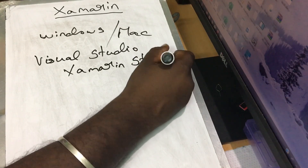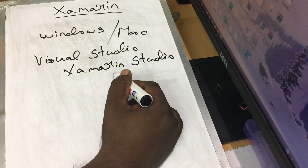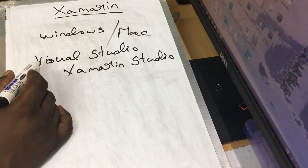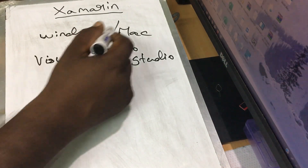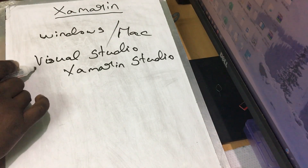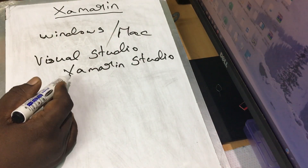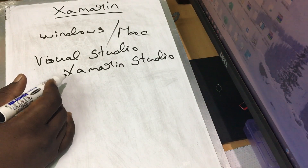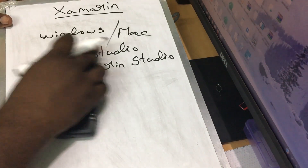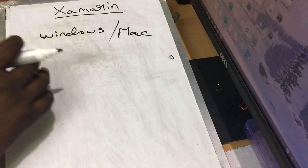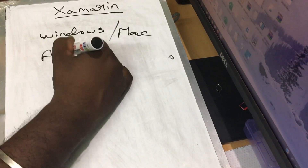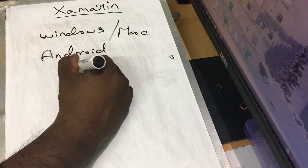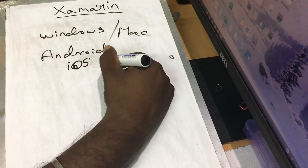If you want to develop using Visual Studio, you can install it; or you can use Xamarin Studio to develop. Xamarin Studio is available for Mac. If you are on Windows, you can develop for both Android and Windows builds. However, if you want to build for iOS, you need to connect a Mac machine.